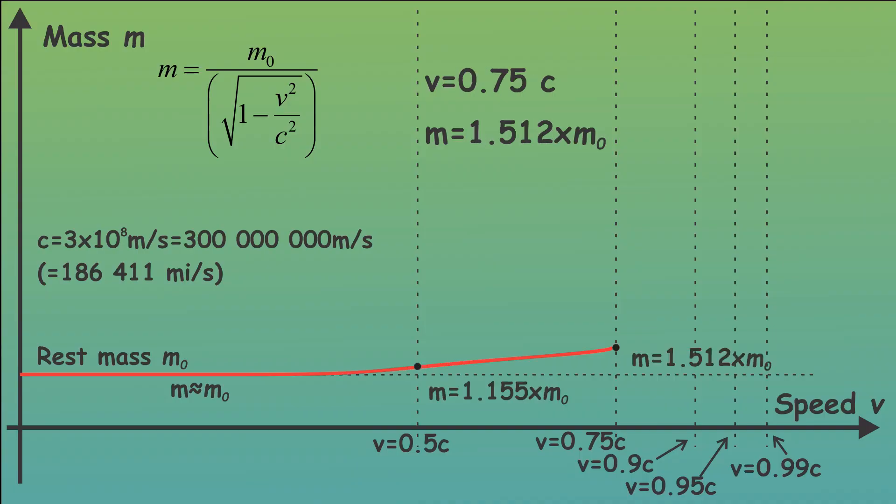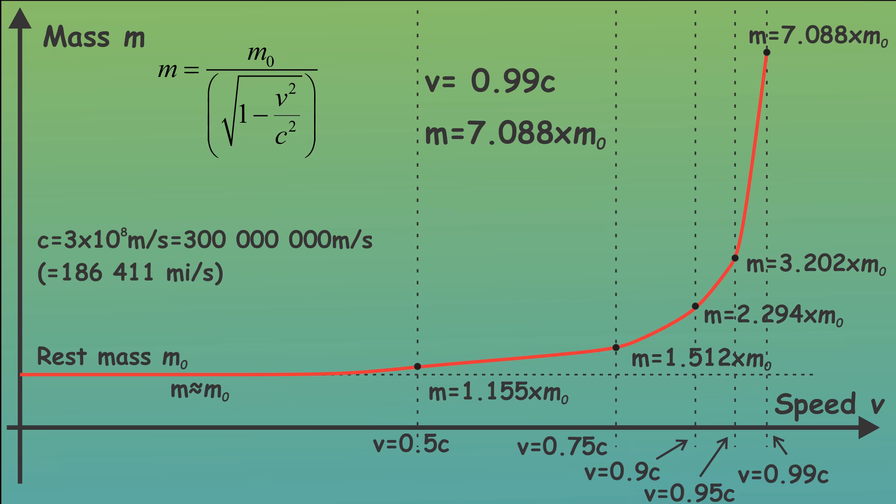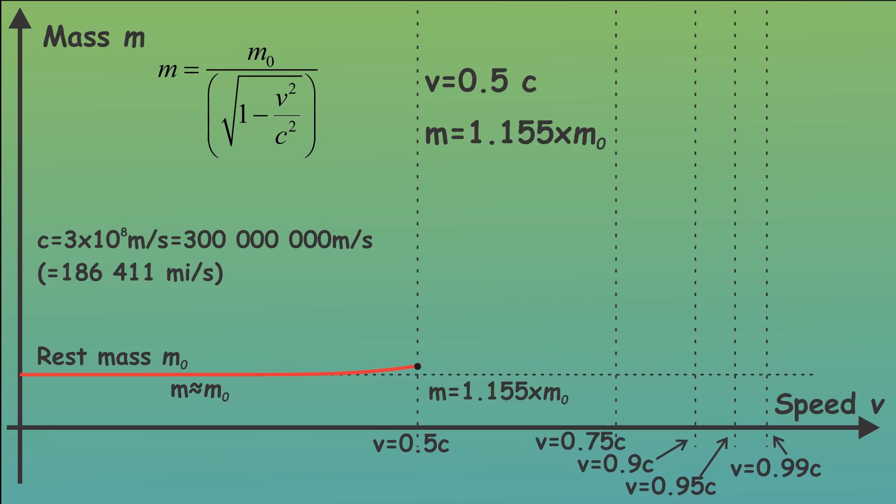On this graph you are able to see the change in mass for specific velocities corresponding with the given equation in which c is the speed of light and v is the velocity of the body.